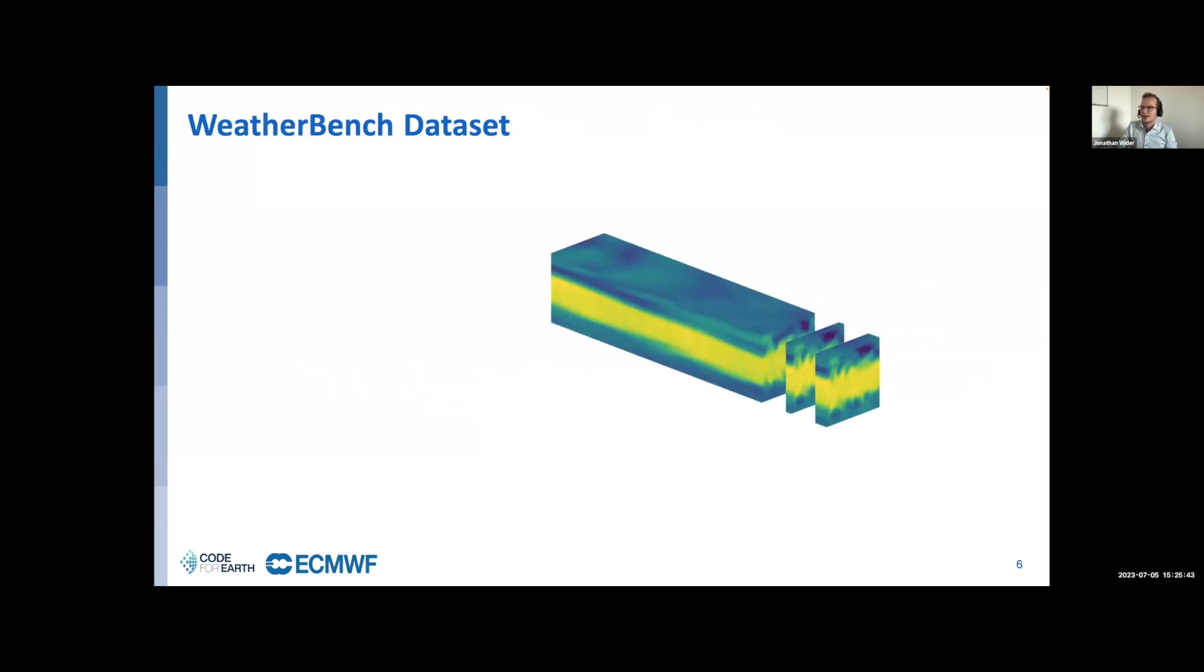What's the data we train this on? It's called the WeatherBench dataset. It was created as a benchmark challenge to benchmark different kinds of machine learning models for weather forecasting. The task is to predict weather three days or five days ahead. WeatherBench is just a downscaled version of ERA5, subsampled to 5.6 degree resolution.